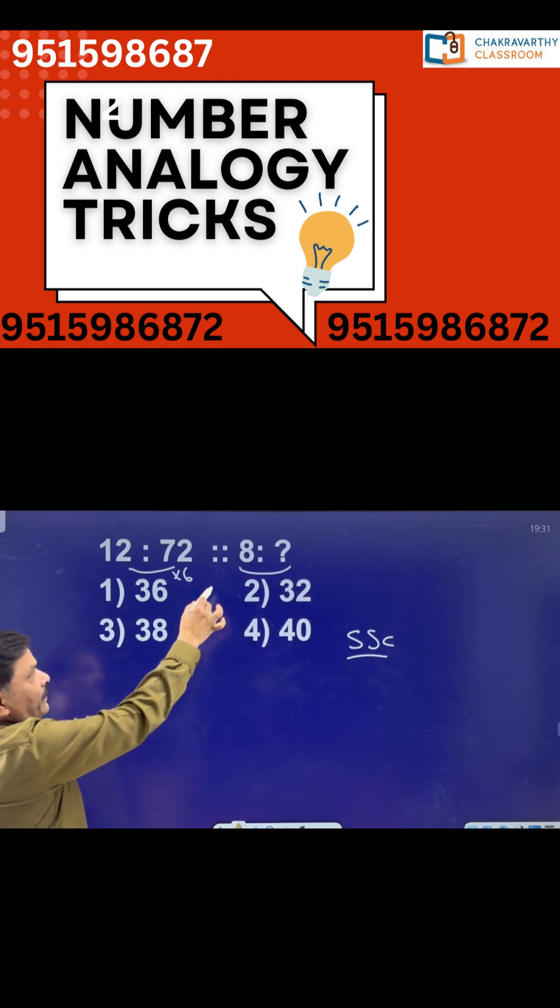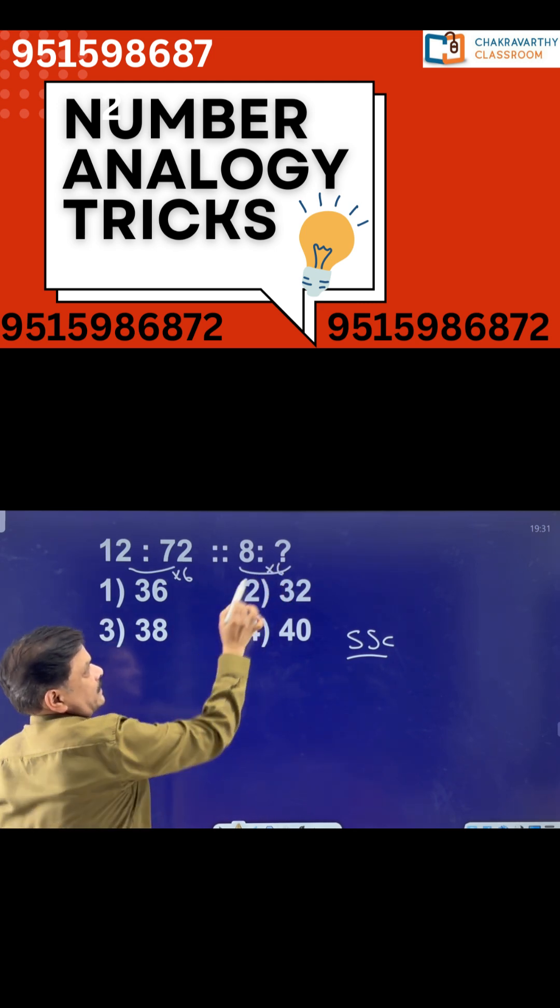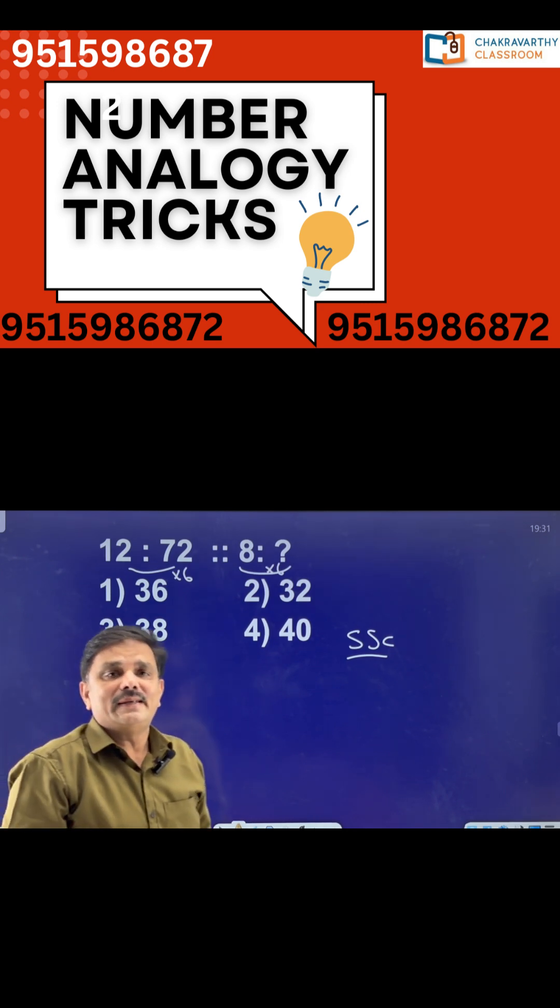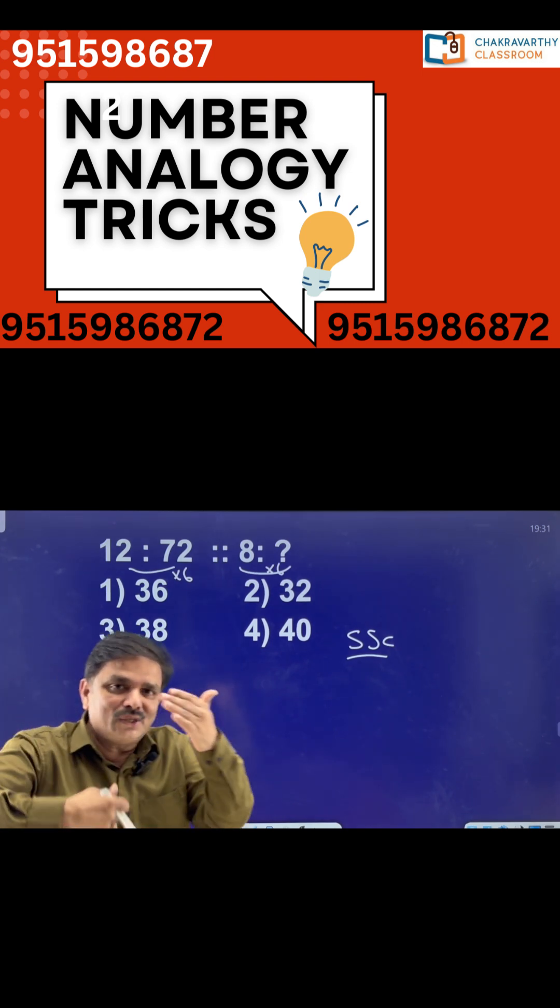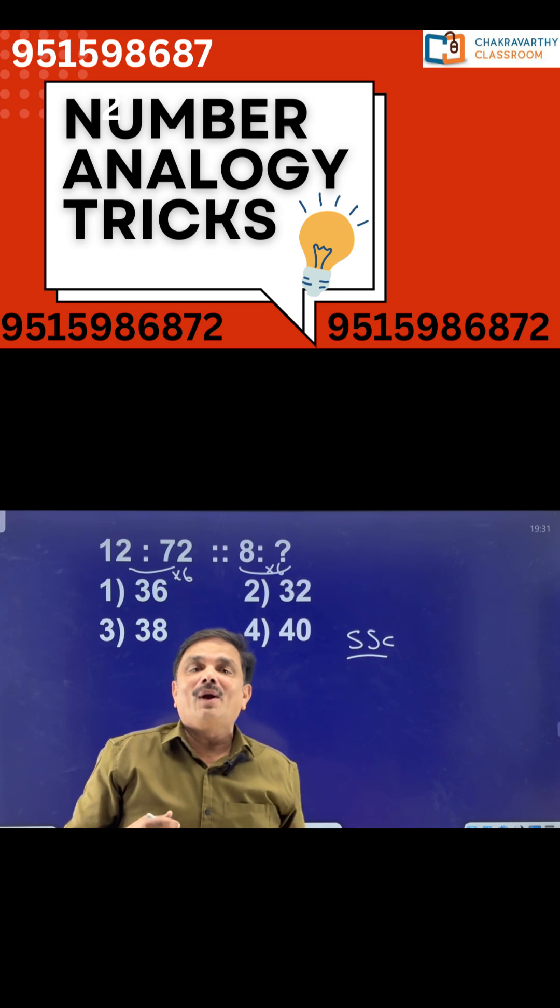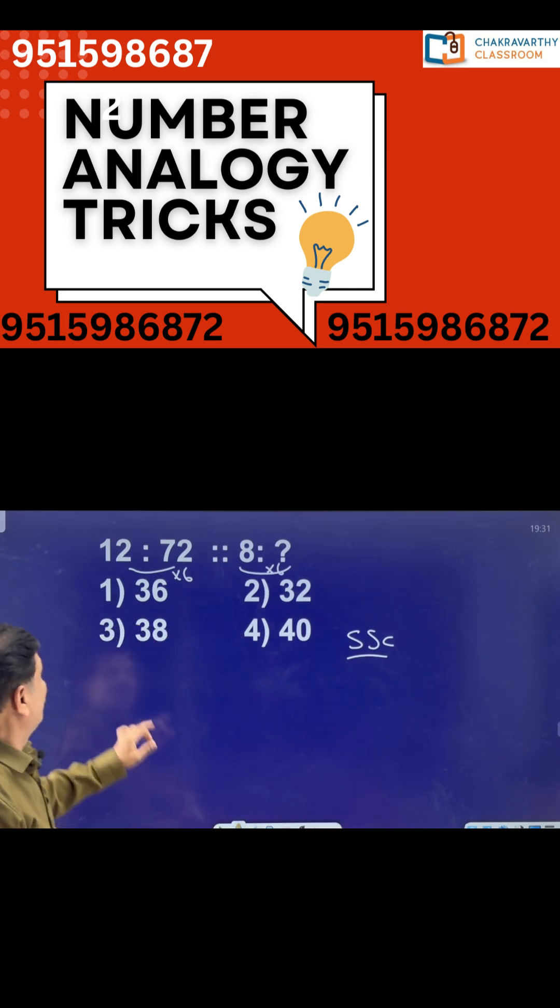So similarly you try for this one: 8 into 6 is 48, but 48 is not one of the given options there. Then immediately what you need to do, just change the logic. Don't hang on to one logic, just change the logic and go there.